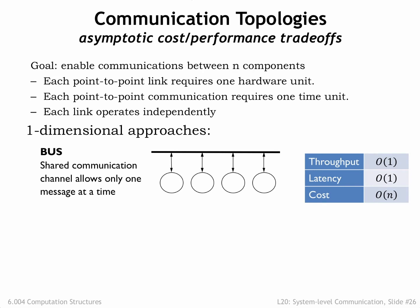Our baseline is the backplane bus discussed earlier, where all components share a single communications channel. With only a single channel, bus throughput is one message per unit time, and a message can travel between any two components in one time unit. Since each component must have an interface to the shared channel, the total hardware cost is order n.